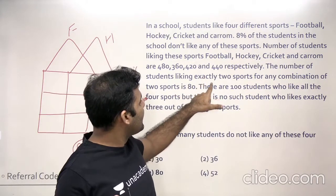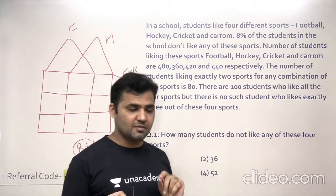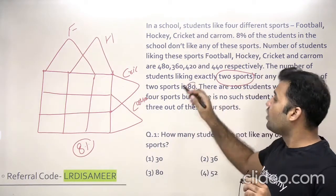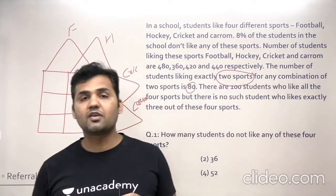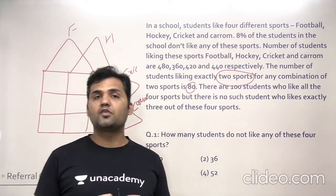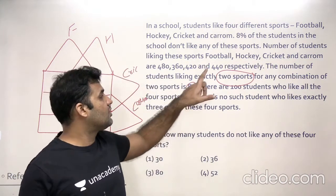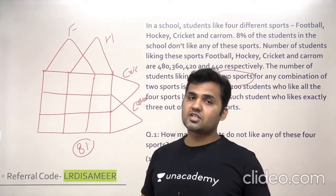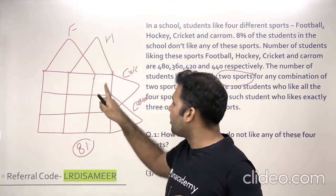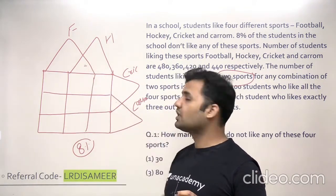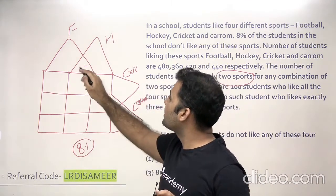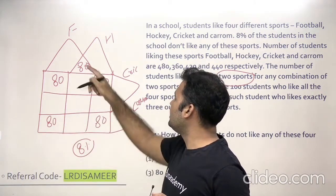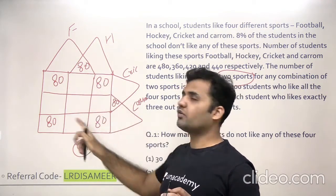The number of students liking exactly two sports is 80. It is not mentioned which two sports, but whatever combination of two sports you consider — football and hockey, hockey and cricket, cricket and carom — every possible combination of two sports equals 80. In a four-set Venn diagram, the four corners and two middle-edge regions represent the intersection of two sets. So all six of these values are 80.